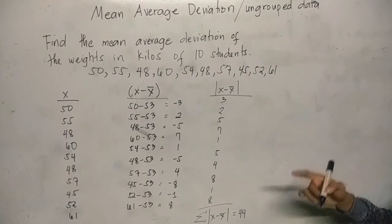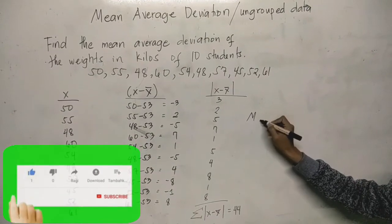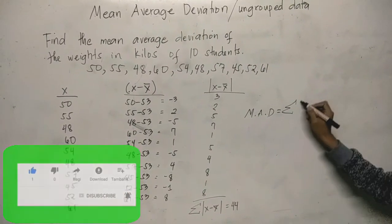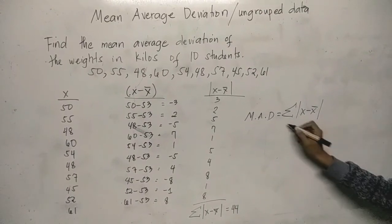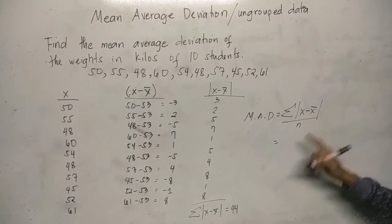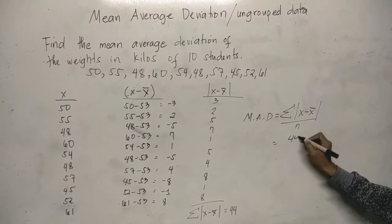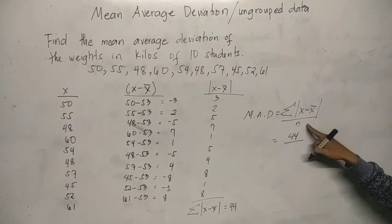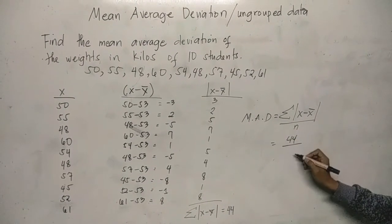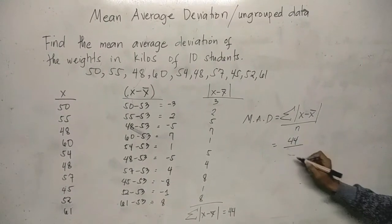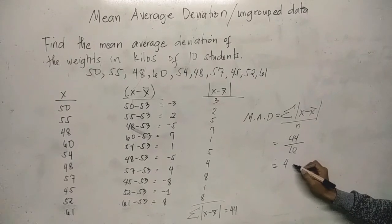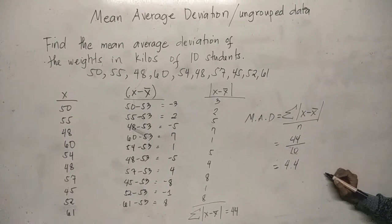That's the time when we can substitute in the formula of mean average deviation. Using the formula for ungrouped data, we have MAD or the mean average deviation equals summation of absolute x minus x bar all over N. Just substitute the values. We have summation of absolute x minus x bar equals 44, all over the total number of values, which is 10. So 44 divided by 10 equals 4.4.